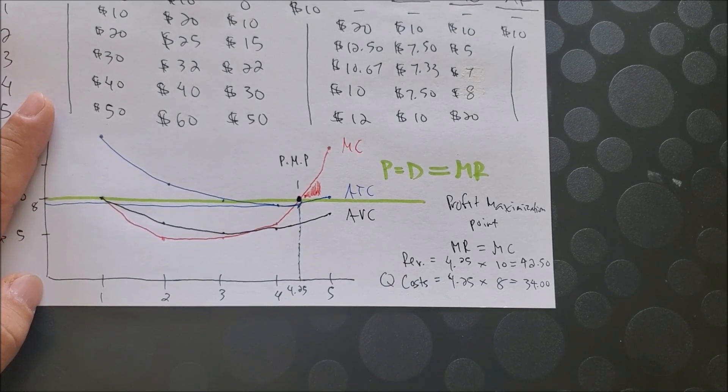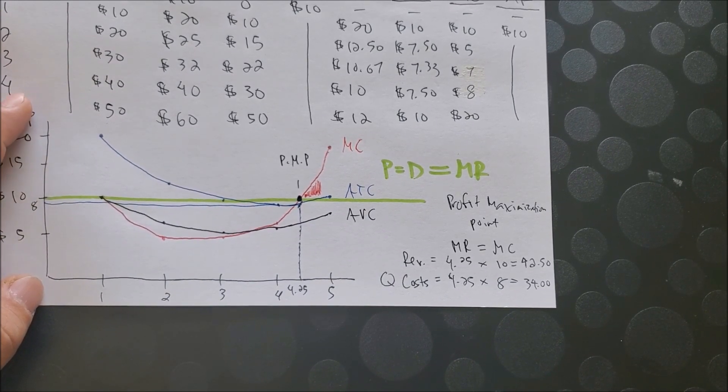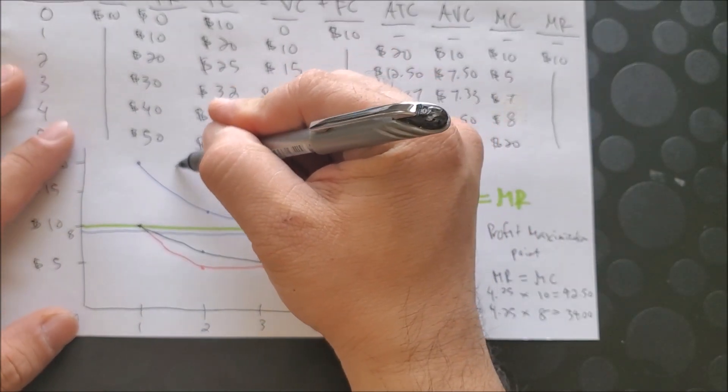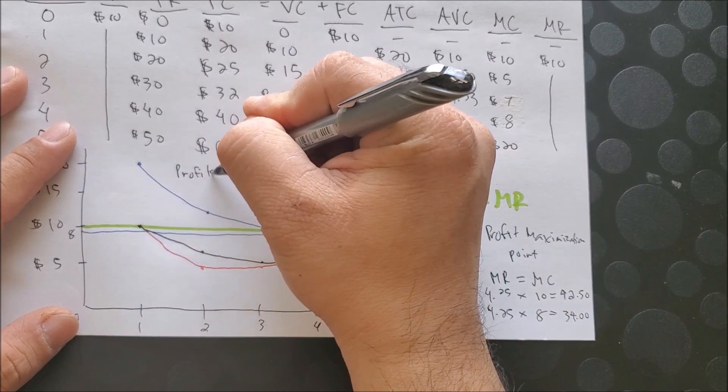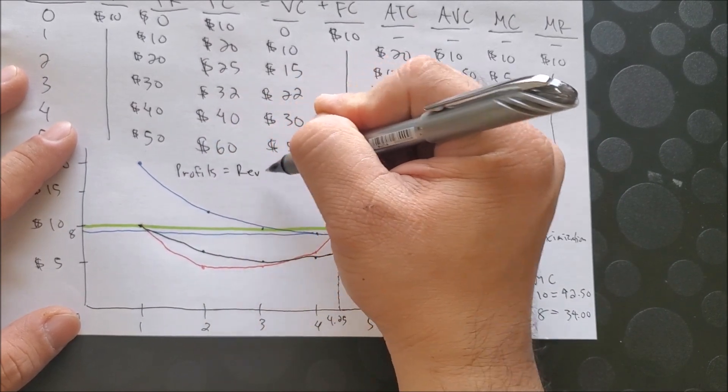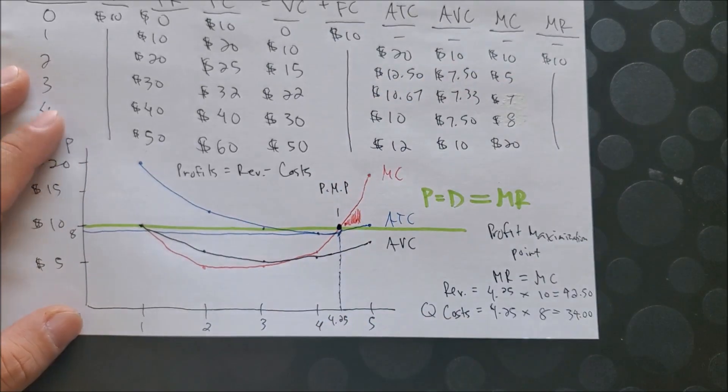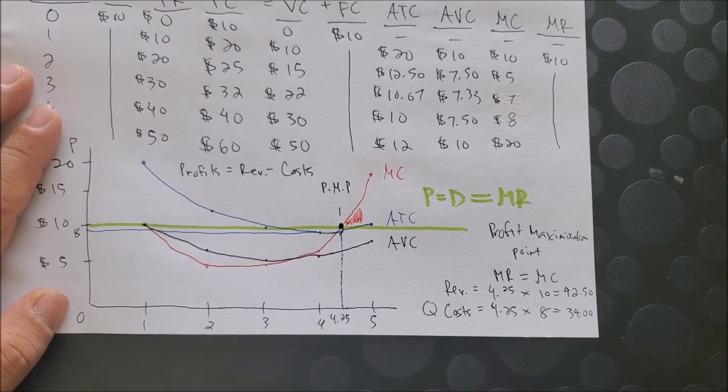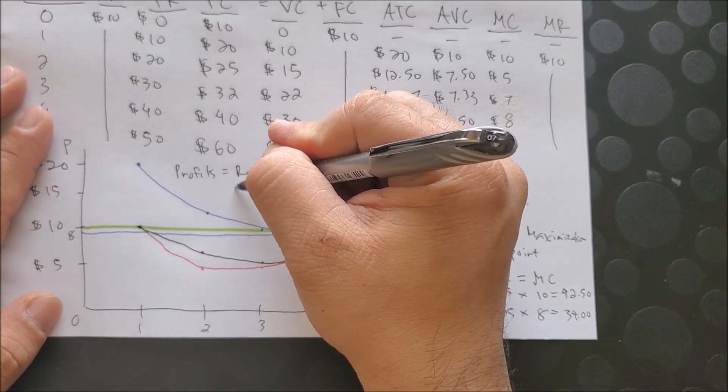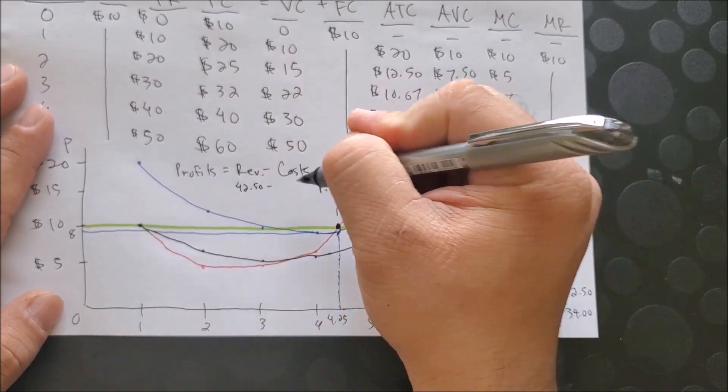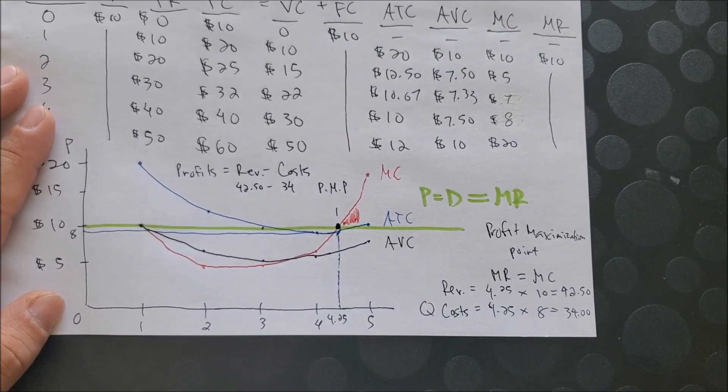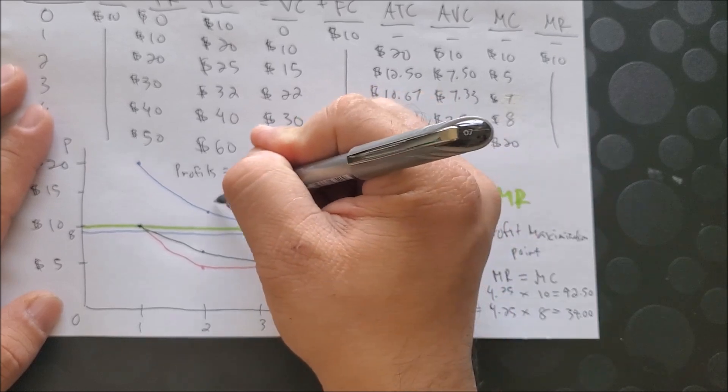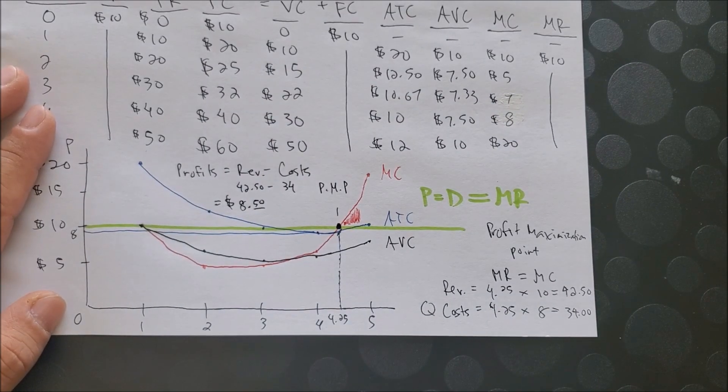So once we have the revenue and the cost, the big question now is, are we making profit? To find profit, it's going to be revenue first minus cost. Always revenue first minus cost. And based on what we have, we have $42.50 minus $34, which gives us a profit of $8.50. Not bad in one day.